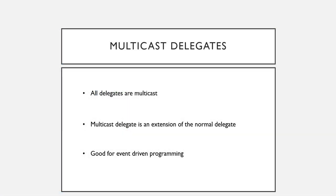Let's quickly discuss what multicast delegates are. All delegates are multicast delegates. What this means is that we can assign one or more methods to a single delegate variable. When we invoke the delegate, all of the methods assigned to the method list are run. We can add a method to a delegate list by using the plus-equals operator. Normally when using multicast delegates it would have a void return type, otherwise the return value is unpredictable because the order of delegate invocation is not guaranteed. Delegates can be good for event-driven programming.